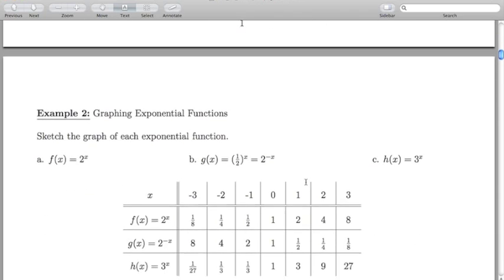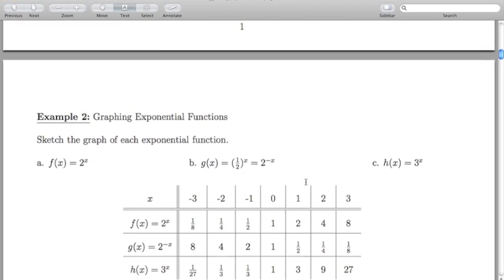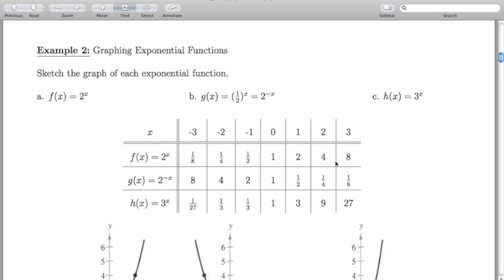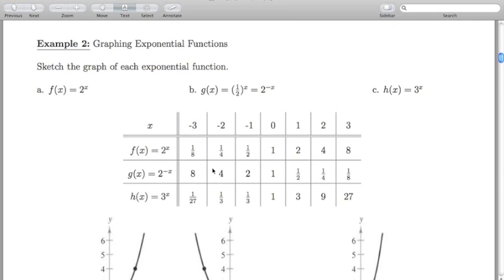So what we want to do in this section—in the past when we've introduced sketching of a new concept or an initial new concept, we start with the point plotting method. Example 2 is an example on graphing exponential functions. We just want to sketch the graph of each exponential function where a is f of x equals 2 to the power x, b is g of x equals 2 to the minus x, and h is 3 to the power of x.